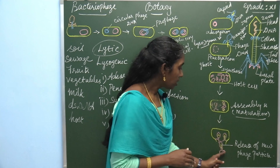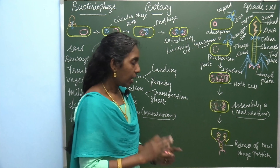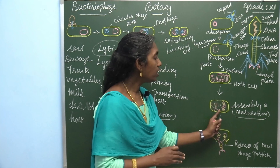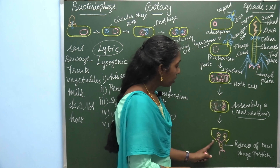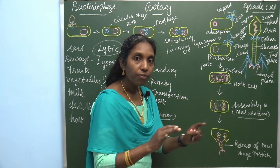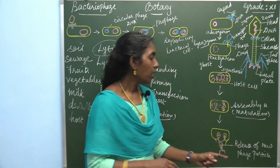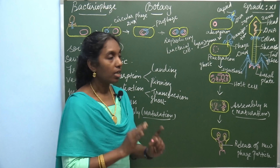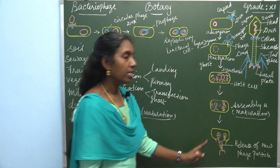The final stage of the lytic cycle is release. The bacteriophage ruptures the host cell wall — lysis takes place and the host is inactivated. All the virulent progeny bacteriophages are released by the rupturing of the bacterial cell wall. This process is known as release of new phage particles. At the end of this process the host is completely inactivated and the bacteriophages multiply and come out.